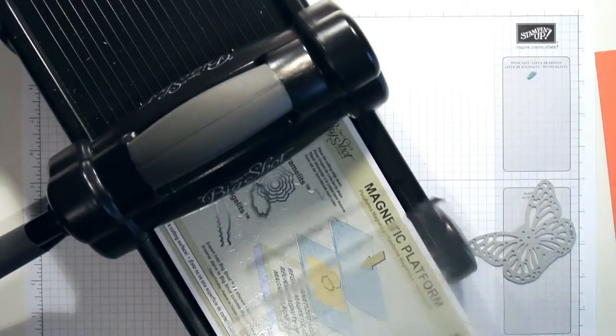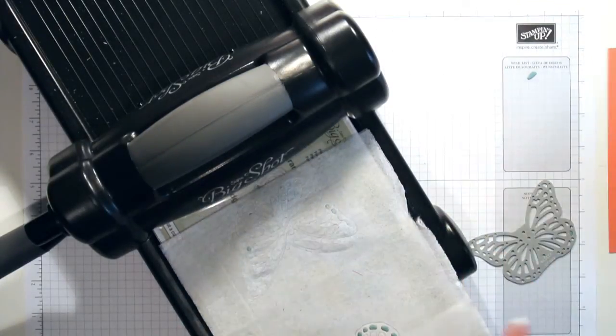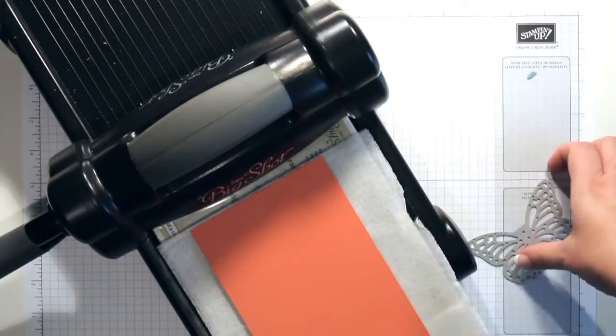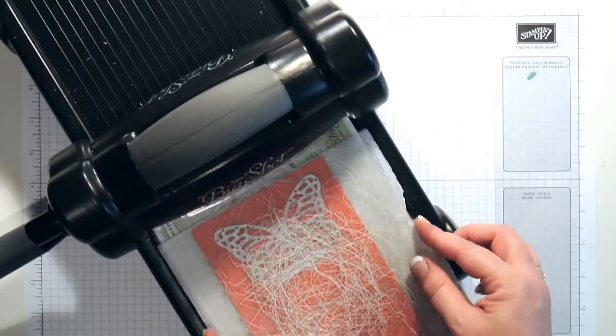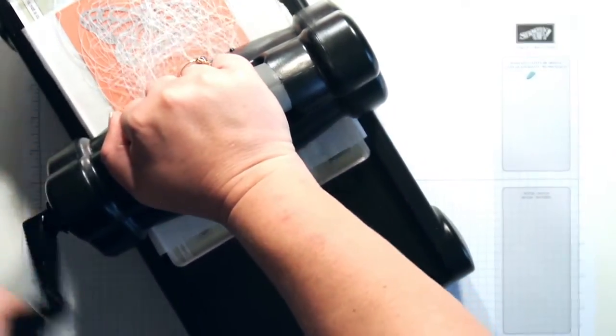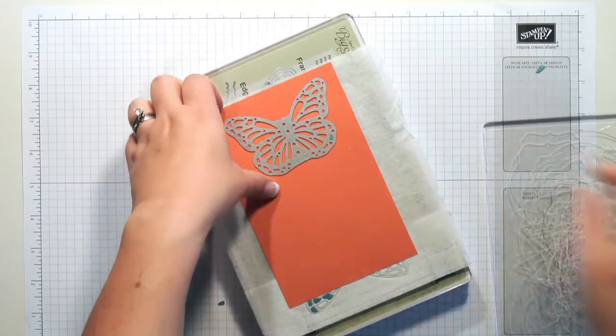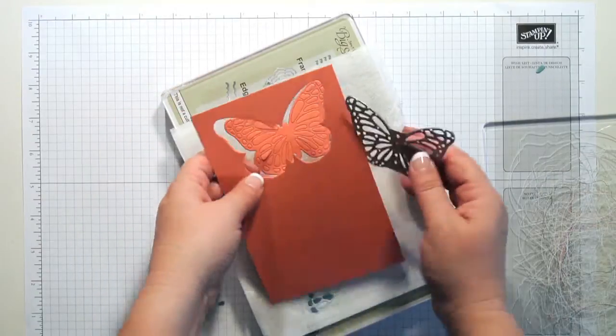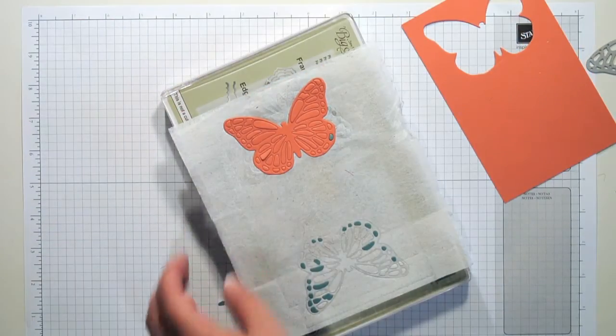Let's take the magnetic platform, the clear plate, the dryer sheet, my Calypso Coral paper, the butterfly, and my second clear plate. There's our second butterfly.